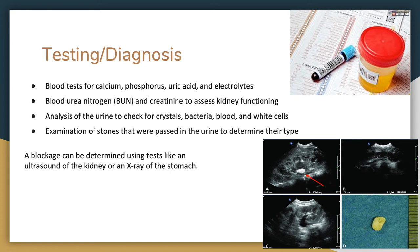Testing and diagnosis for kidney stones include blood tests for calcium, phosphorus, uric acid, and electrolytes. Blood tests can determine whether you have too much uric acid or calcium which can cause stones to form. The urine can also be analyzed to check for crystal-forming elements such as bacteria, blood, and white blood cells. Blood urea nitrogen, or BUN, and creatinine are blood tests that the doctor uses to check how well your kidneys are working. Stones passed in the urine can also be examined to determine their type. A blockage can be determined using tests like an ultrasound of the kidney or an x-ray of the stomach.